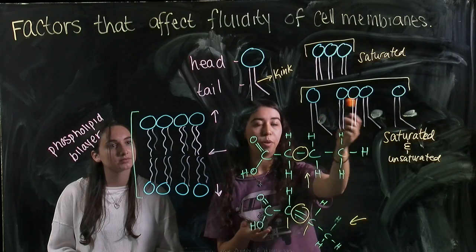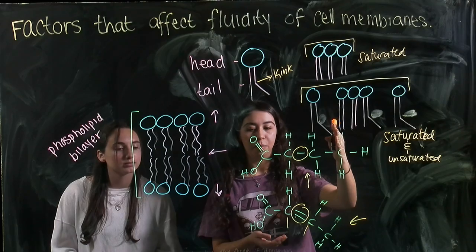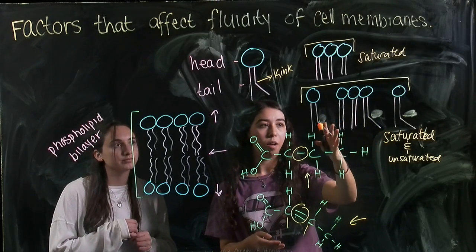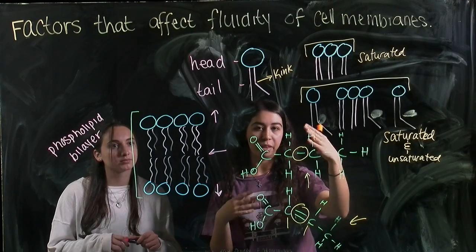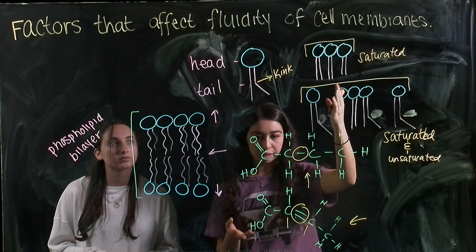The farther apart the phospholipids are from each other because of these kinks, the intermolecular forces, particularly van der Waals forces, are weakened and the membrane is much more fluid. But if they're really closely packed because the tails are saturated, then the fluidity of the membrane decreases.